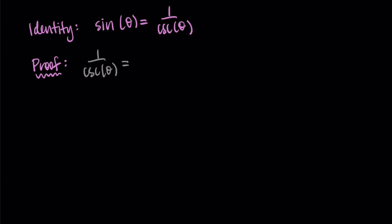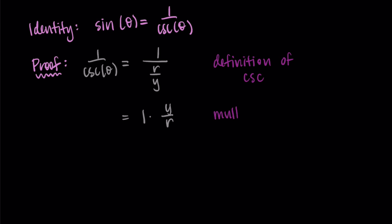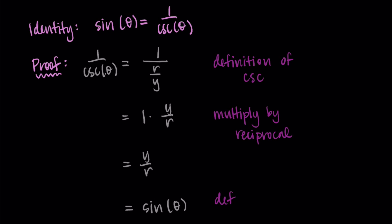We know that cosecant is r over y — that's how we defined it. So I can write this as one over r over y, by definition. Then I can simplify by multiplying by the reciprocal, giving me one times y over r, which is just y over r. And by definition of sine, sine is y over r. So we've shown that one over cosecant of theta is equal to sine of theta. I'll draw a little box here to indicate the proof is done.